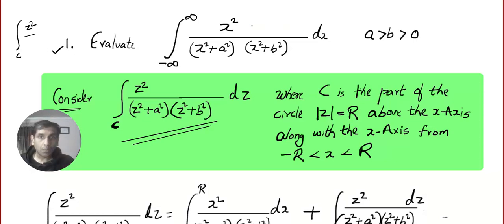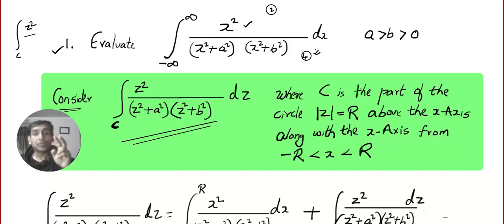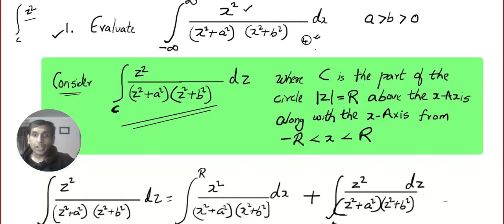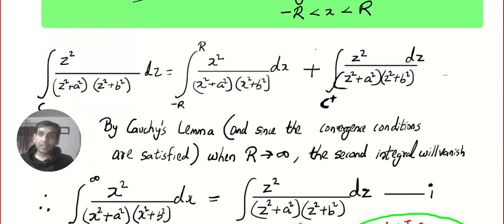This is Type 1 — polynomial divided by polynomial. The degree of the numerator is 2, and the degree of the denominator after multiplication is 4, so the degree of the denominator is at least 2 more than the degree of the numerator. That means we can apply this complex integration technique.